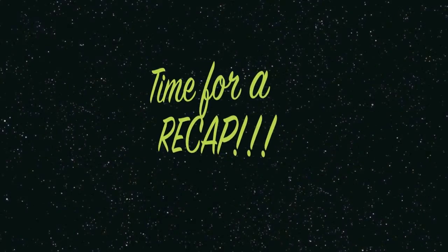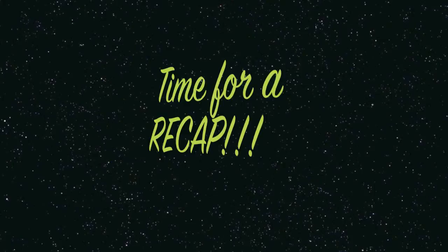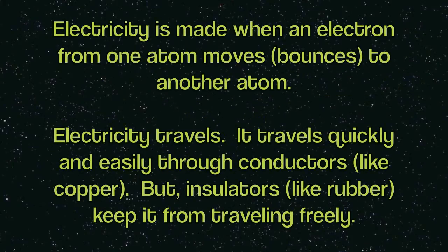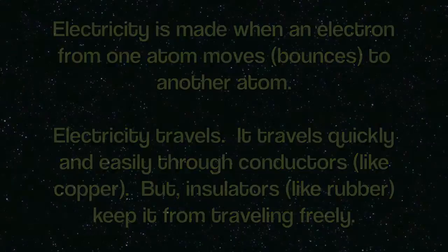Time for a recap! Electricity is made when an electron from one atom moves and bounces to another atom. Electricity travels quickly and easily through conductors like copper. But insulators like rubber keep it from traveling freely.